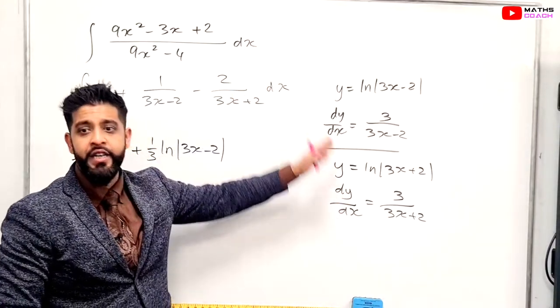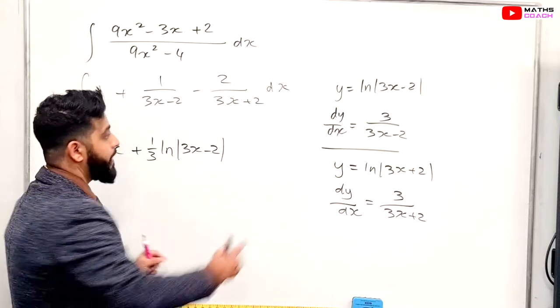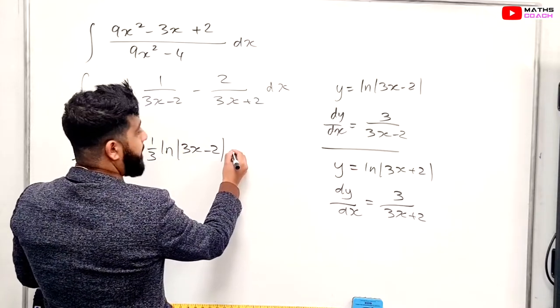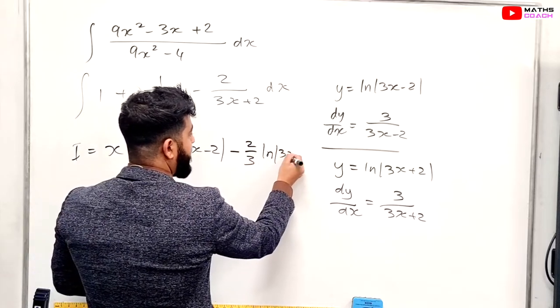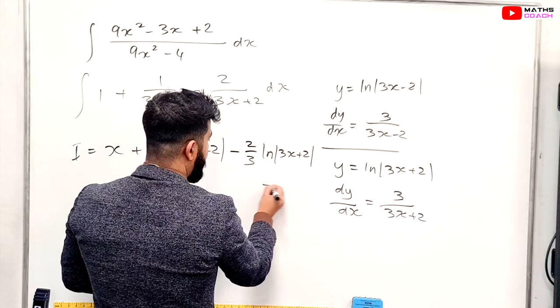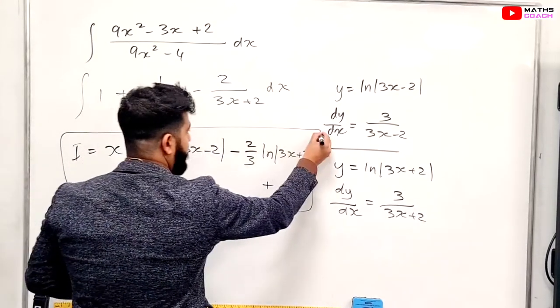So we're going to divide by 3 times by 2, which is the same as multiplying by 2 over 3. This one. So it's going to be minus 2 over 3 ln 3x plus 2 plus c. And this is your final integrated answer.